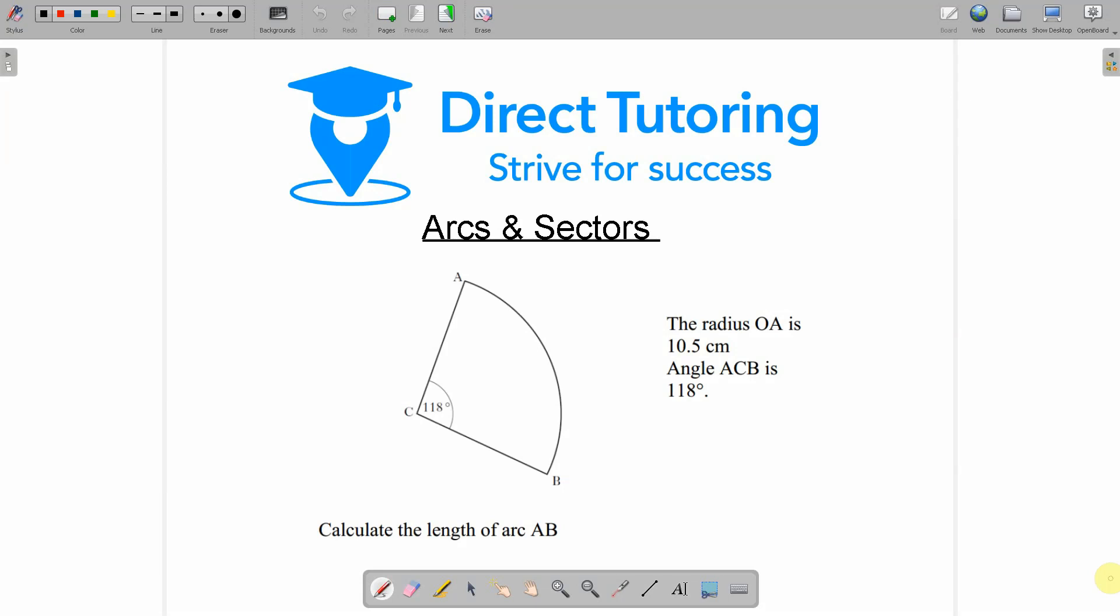So this question here tells us that the radius OA is 10.5 centimeters and the angle ACB is 118 degrees. Now what it's asking us is to calculate this length here so from A to B.